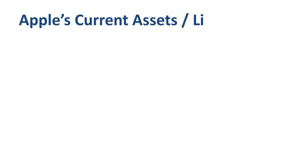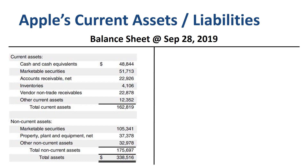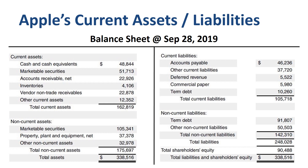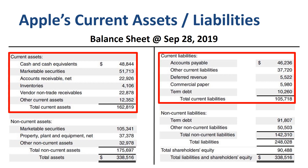Second example: the balance sheet of Apple of September 2019. Assets on the left, totaling $339 billion. Liabilities and equity on the right, totaling $339 billion. Current assets of $163 billion, current liabilities $106 billion, so a current ratio of 1.54. For every dollar of current liabilities, there is $1.54 of current assets.